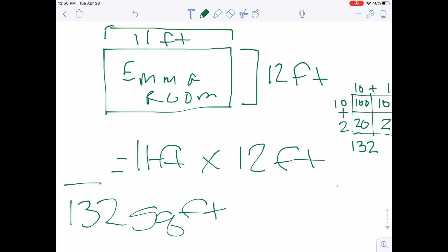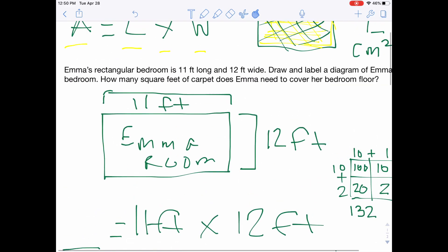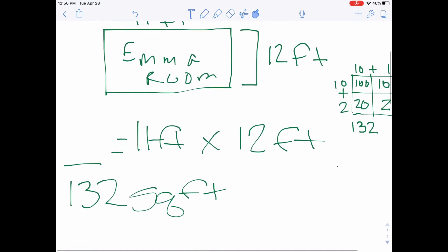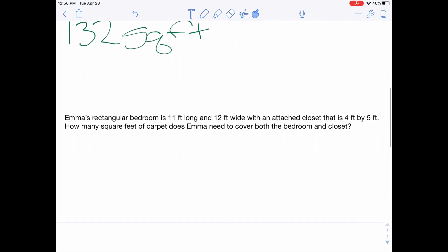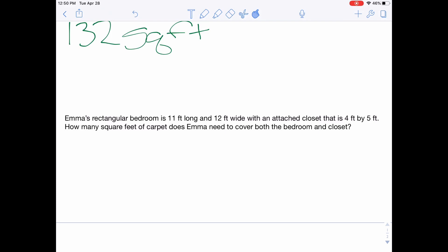So 132 square feet. We are then going to scroll down. So I'm going to remind you that this is only for her bedroom. She'd need 132 square feet to cover the carpet. But we're going to look at one that's a little bit harder because we always want to stretch our brains. Emma's rectangular bedroom is 11 feet long and 12 feet wide with an attached closet that is 4 feet by 5 feet.